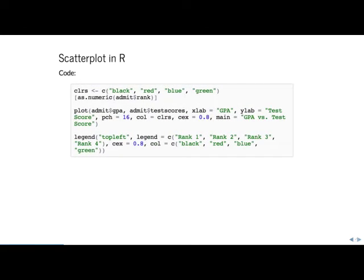The dollar sign is a selector that selects a particular column. In the plot function, 'admit$GPA' is the x-axis and the test score is the y-axis. The as.numeric function is used because when you input data into a data frame, some factor levels — like if it's a categorical variable — might be inputted as a string. So as.numeric changes everything to numeric values.